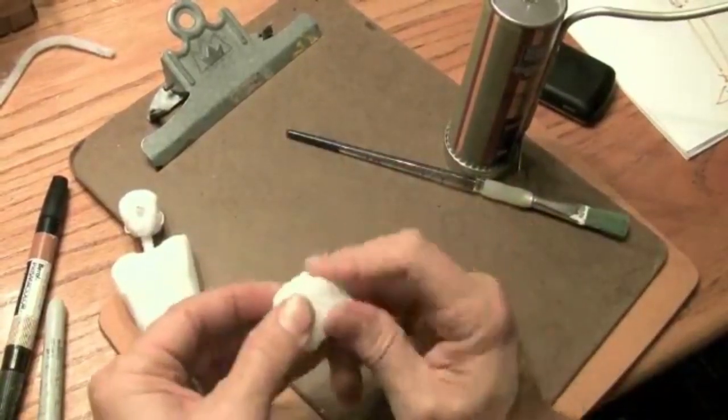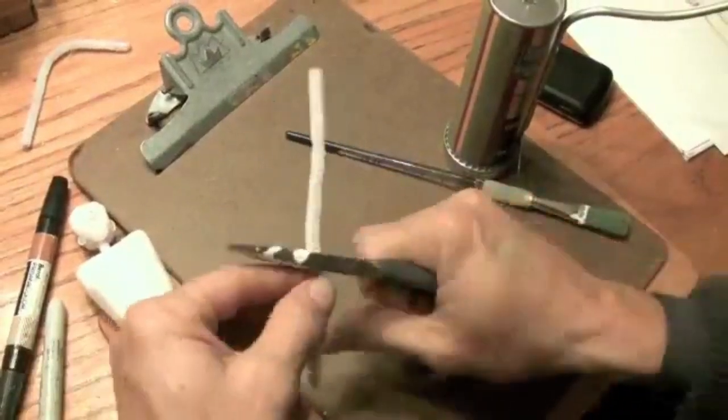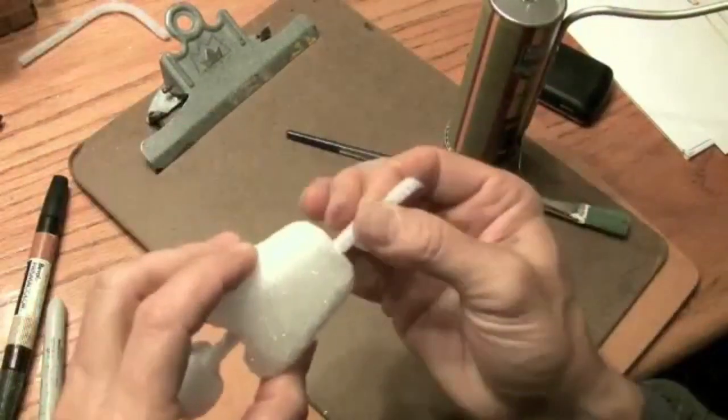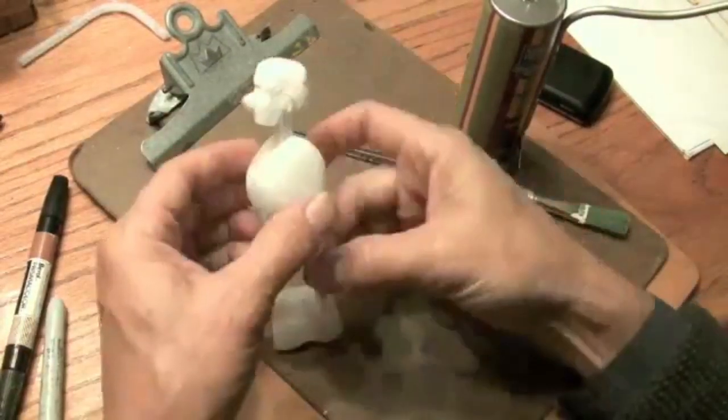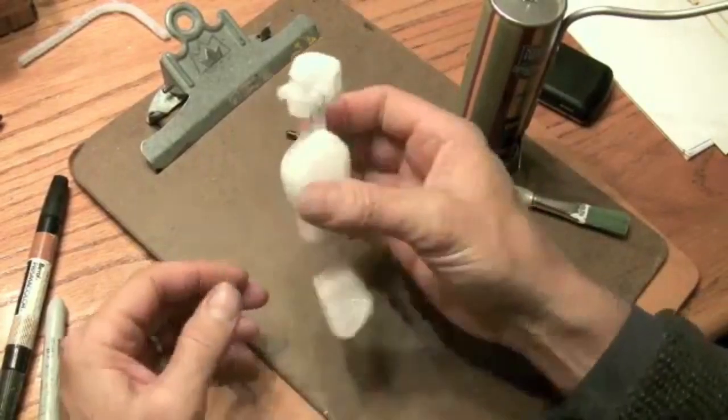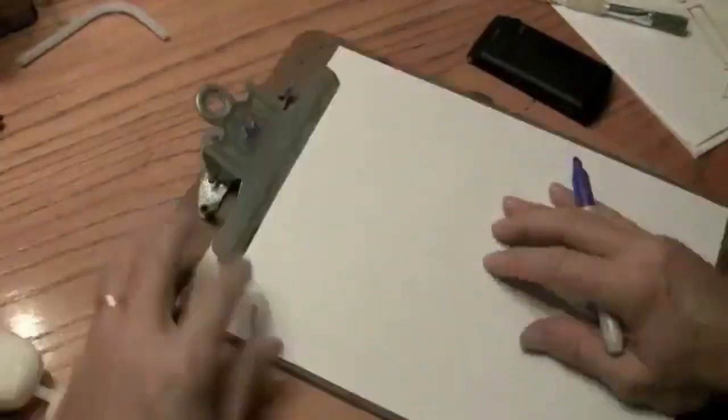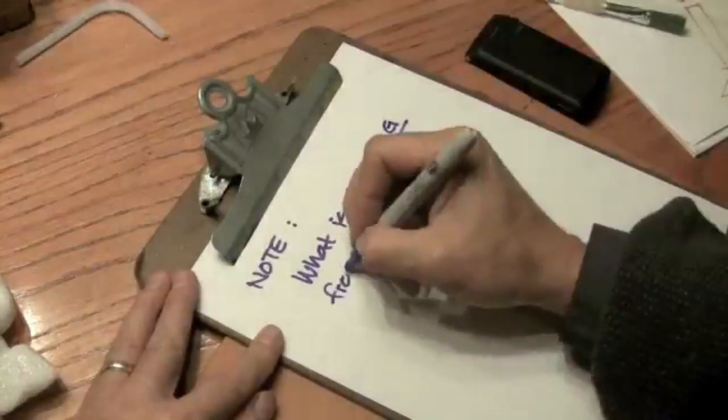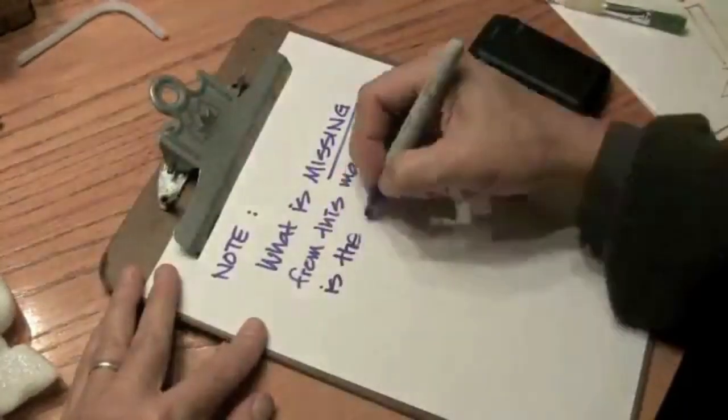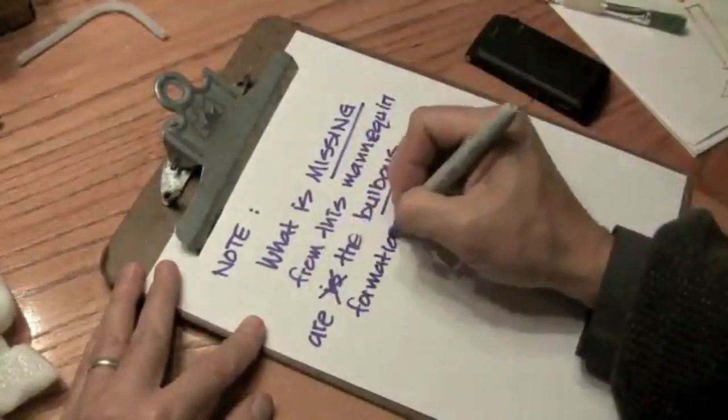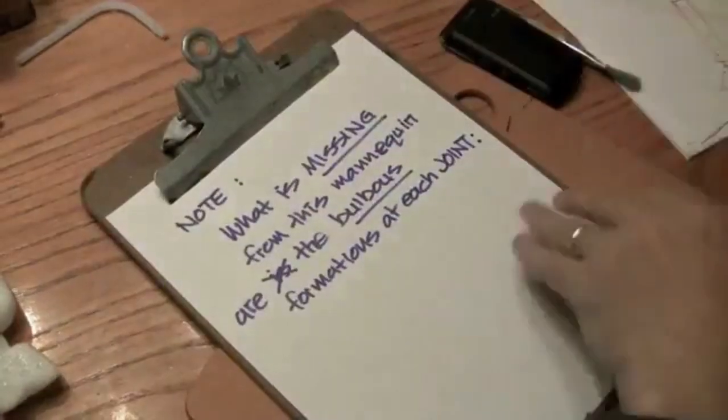Pipe cleaner to hold it together. If you really want to get good at drawing a human figure, build this yourself. Watch it in slow motion. See the curvature of the spine? Not too bad for a quick model. Now what is missing from this mannequin are the bulbous formations at each joint.